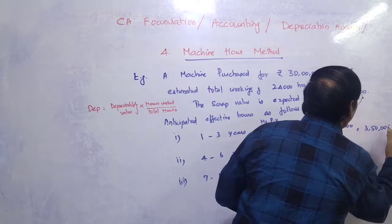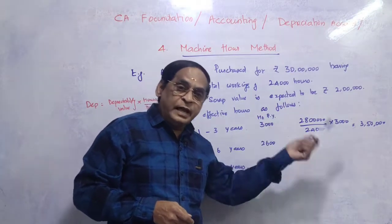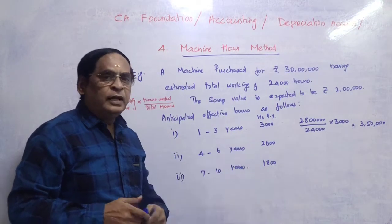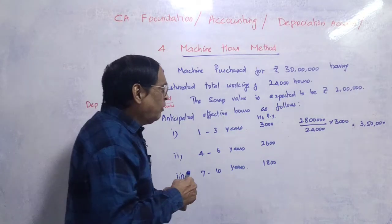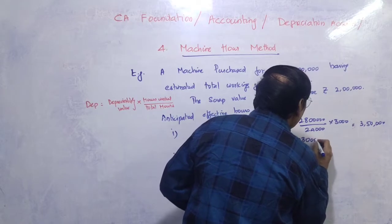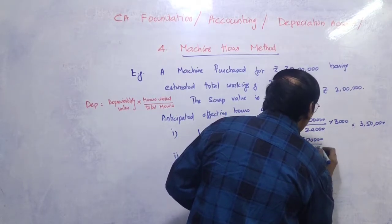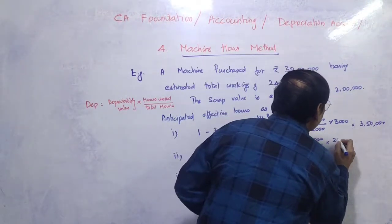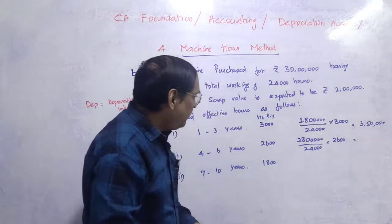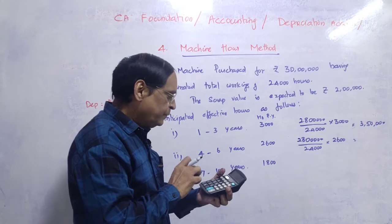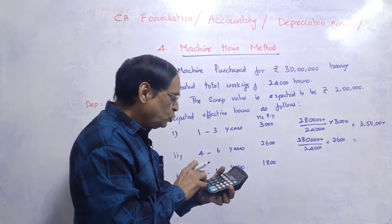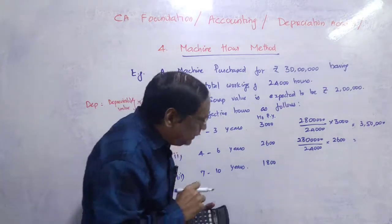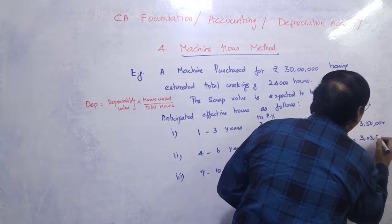So the first year depreciation is 3,50,000; second year is 3,50,000; third year is 3,50,000 — assuming 3,000 hours each year. For years 4, 5, and 6, if actual hours are 2,600 hours, then depreciation = 28 lakhs ÷ 24,000 × 2,600 = 3,03,333 rupees approximately for each of those years.